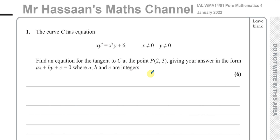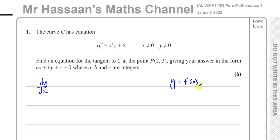So first of all, we want to find the equation of the tangent to the curve, which means we need to find the gradient of the curve at that point P. To find the gradient of the curve we need to find the gradient function which is dy/dx. Now normally we would have an equation where Y is equal to some function of X, and then you just differentiate both sides with respect to X. In this case, what we have is something where it's not easy to make Y the subject.